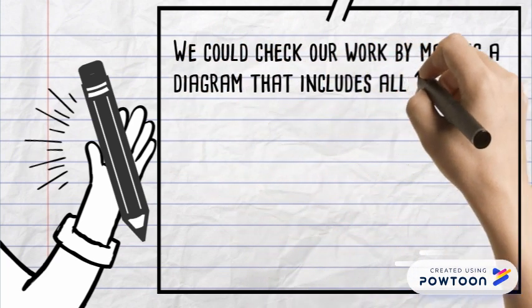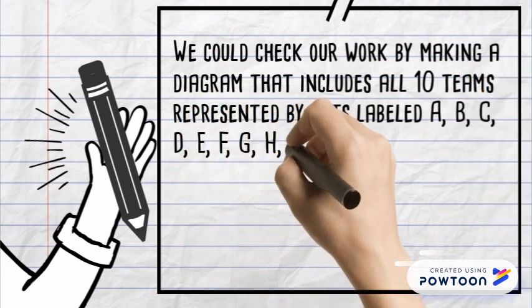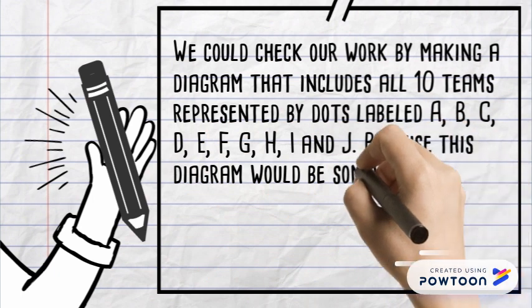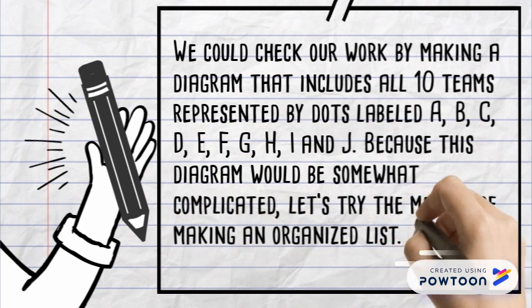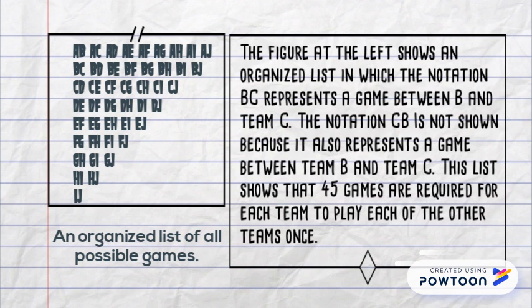Because this diagram would be somewhat complicated, let's try the method of making an organized list. The figure shows an organized list in which the notation BC represents a game between team B and team C. The notation CB is not shown because it also represents a game between team B and team C. This list confirms that 45 games are required for each team to play each of the other teams once.